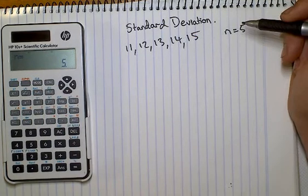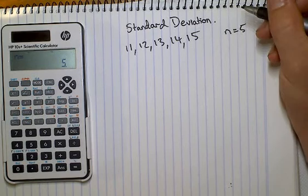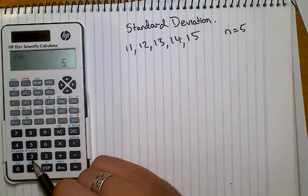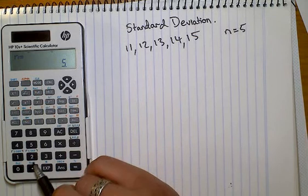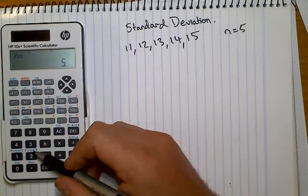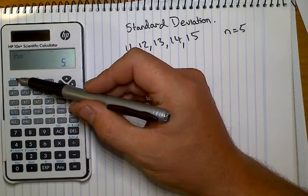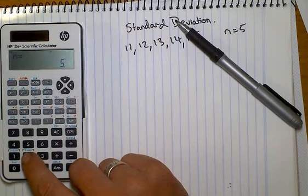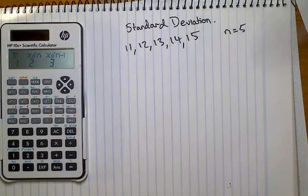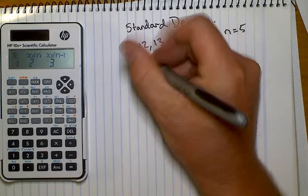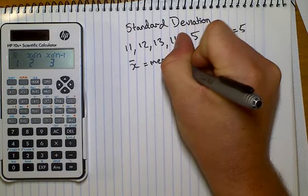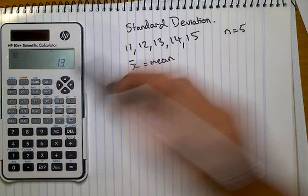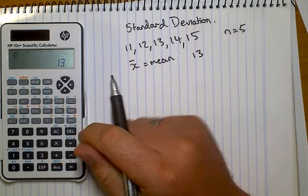From here there's a few things we can do with the calculator to find what we need. We might start with the average. Down here we've got SVAR above the 2. To access that you can see it's in blue, and the corresponding button for that is Shift, which has the blue menu above it. So press Shift, then 2. A few things come up — the main one to look at is 1, which we call X-bar, that's the mean or average. So press 1, equals. Our average is equal to 13.